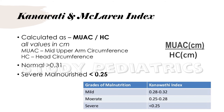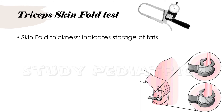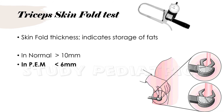The triceps skin fold test measures skin fold thickness, which indicates the amount of fat stored and the nutritional status. In a normal child, the thickness is more than 10 mm. But in a child with PEM, the thickness is less than 6 mm.